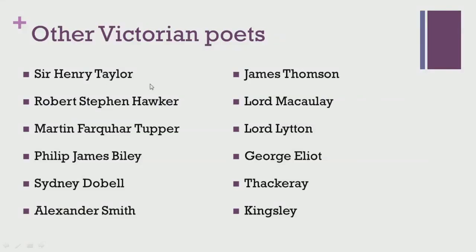Other major Victorian poets who wrote and lived during this period include Sir Henry Taylor, Robert Stephen Hawker, Martin Farquhar Tupper, Philip James Bailey, Sydney Dobell, Alexander Smith, James Thomson, Lord Macaulay who is also a prose writer, Lord Lytton, George Eliot, Thackeray, and Kingsley — some of whom were also significant novelists and prose writers. These other Victorian poets produced a significant number of works, but since they were not considered representative of the age and their work was not of notable worth, we shall not be going into the details of their works.